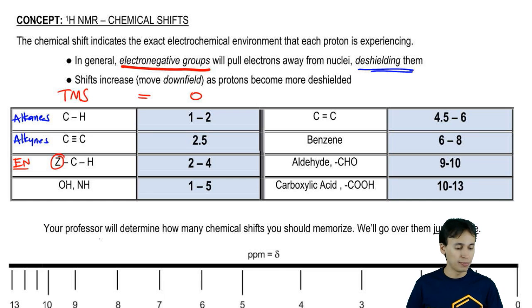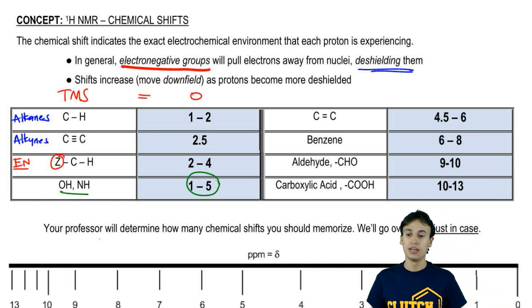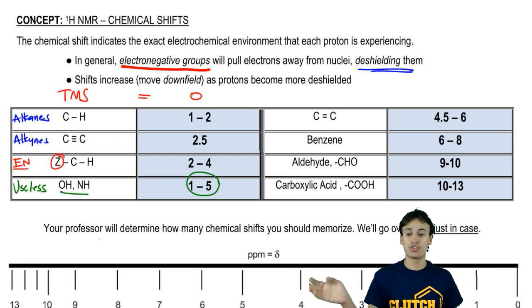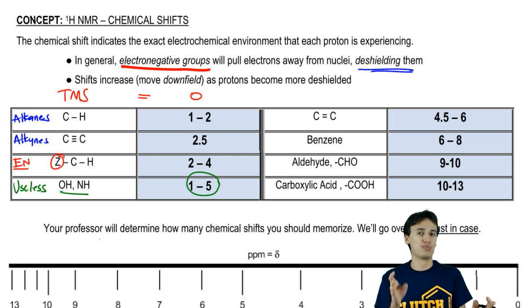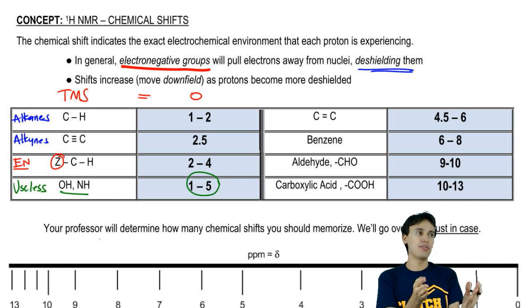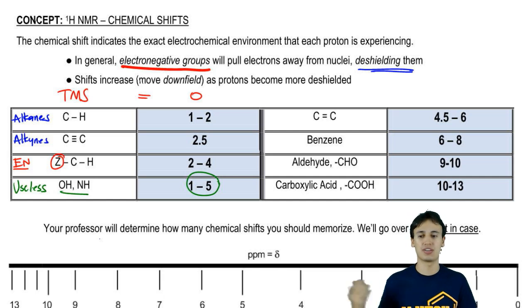Then we've got alcohol and amine. These have a very broad range of 1 to 5, and they're such a broad range that I consider these useless in terms of chemical shift because it's so variable. Remember I told you that NMR really only goes to like 13, so 1 through 5 is like a third of the entire spectrum. It's not very helpful if I have a peak at 2 or at 5 - it doesn't tell me much. I'm really just going to not even focus on those shifts because they're pointless. They don't really give us a lot of information.